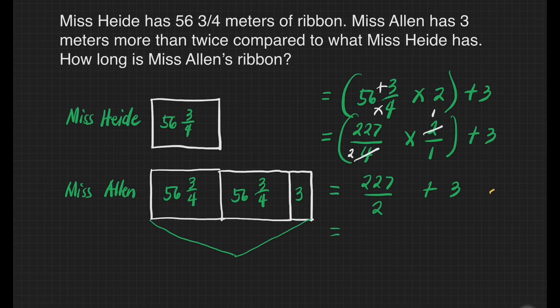Let's divide here 227 divided by 2. How many 2's are there in 2? That's 1. 1 times 2 is 2. Subtract, that's 0. Bring down 2. How many 2's are there in 2? That's 1. 1 times 2 is equal to 2. Subtract, that's 0. Bring down 7. How many 2's are there in 7? That's 3. 3 times 2 is equal to 6.